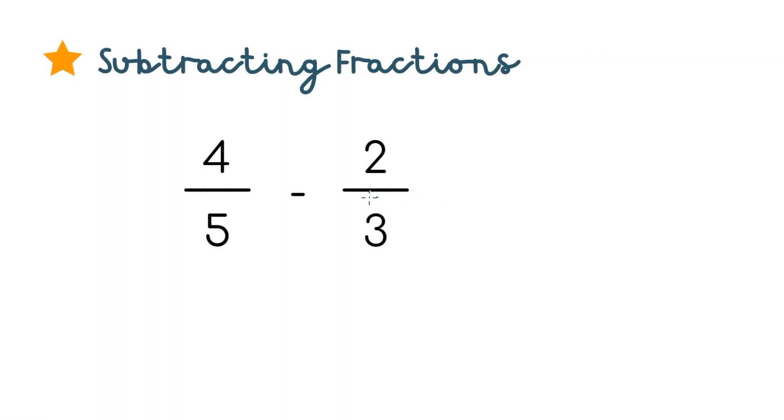One more bonus problem, the same trick works for subtracting fractions. So if our plus sign turns into a minus, it's no problem, we can use the same trick except change one little thing. We'll still cross multiply, so 4 times 3 is 12, and 2 times 5 is 10.